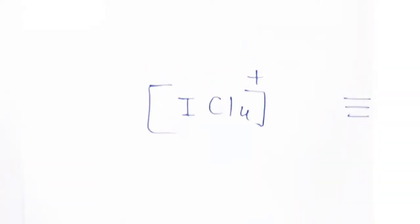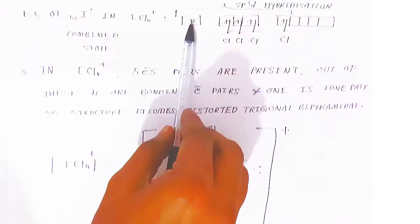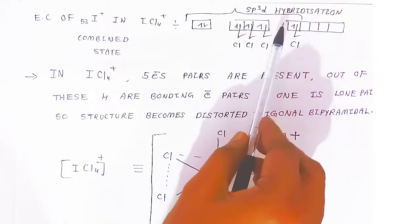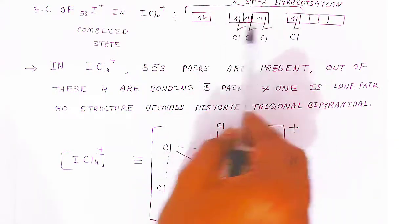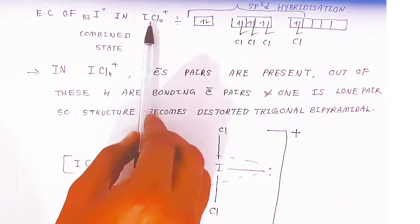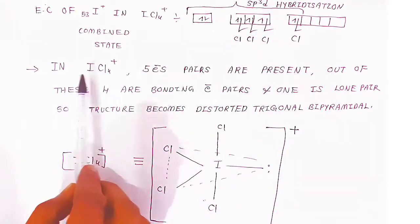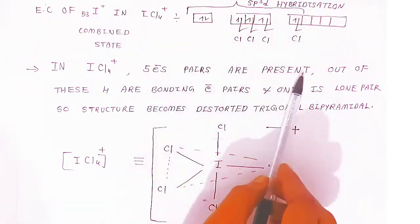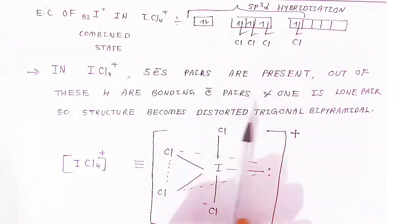Before forming bonds, sp³d hybridization takes place: one s orbital, 3 p orbitals, and 1 d orbital are involved. The 4 chloride atoms overlap with these atomic orbitals of the iodine cation and form ICl₄⁺. The combined state electronic configuration is formed. In ICl₄⁺, 5 electron pairs are present — 4 are bonding pairs and 1 is a lone pair.